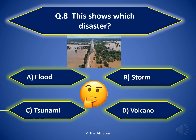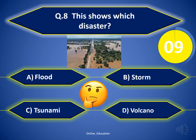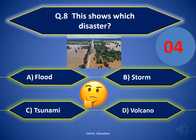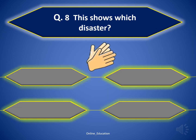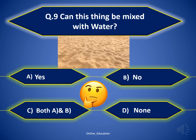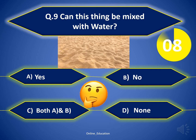Question 8. This shows which disaster? The correct answer is Option A — Flood.